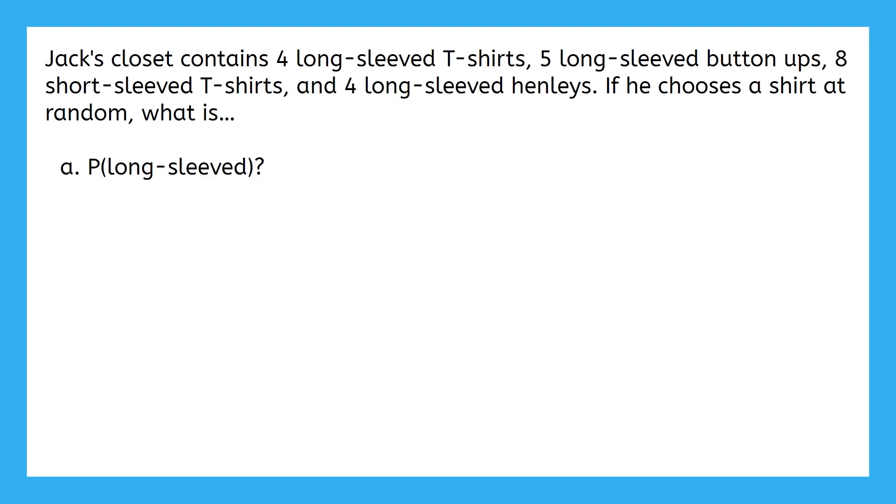Let's start with just part A. As a reminder, here is our simple probability formula. What do you think represents the number of total outcomes for this scenario? Since Jack is picking out a shirt, the total number of outcomes is just the total number of shirts. And for part A, what does the number of outcomes that meet the criteria mean? Our criteria is long-sleeved, so this is the number of shirts that are long-sleeved. Pause the video here and fill in the formula yourself.